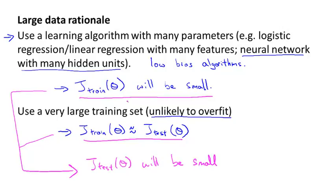Another way to think about this is that in order to have high performance learning algorithm, we want it not to have high bias and not to have high variance. So the bias problem, we're going to address by making sure we have a learning algorithm with many parameters. And so that gives us a low bias algorithm. And by using a very large training set, this ensures that we don't have a variance problem either. So hopefully our algorithm will have low variance. And so it's by putting these two together that we end up with a low bias and a low variance learning algorithm. And this allows us to do well on the test set. And fundamentally, it is a key ingredient of assuming that the features have enough information and we have a rich class of functions. That's what guarantees low bias. And then it's having a massive training set that that's what guarantees low variance.